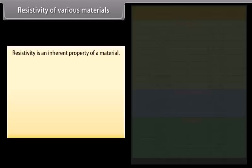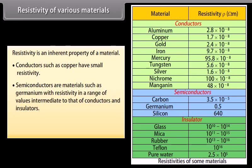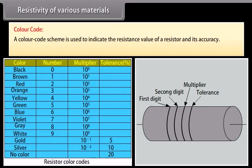Resistivity is an inherent property of a material. Conductors such as copper have small resistivity. Semiconductors such as germanium have resistivity in a range intermediate to that of conductors and insulators. Insulators such as rubber have large resistivity.